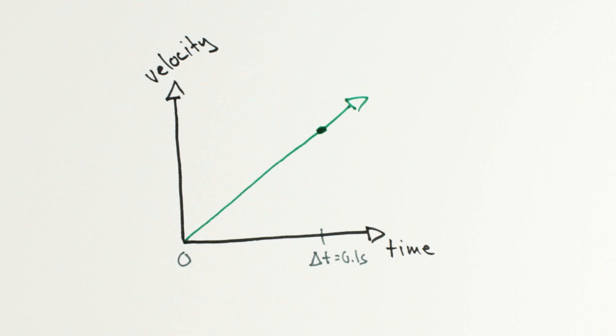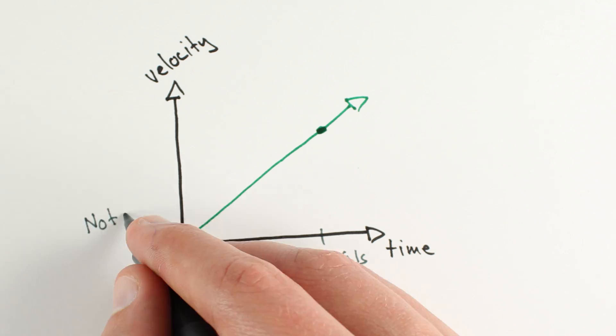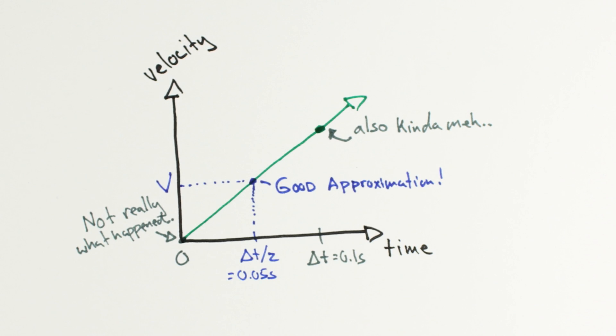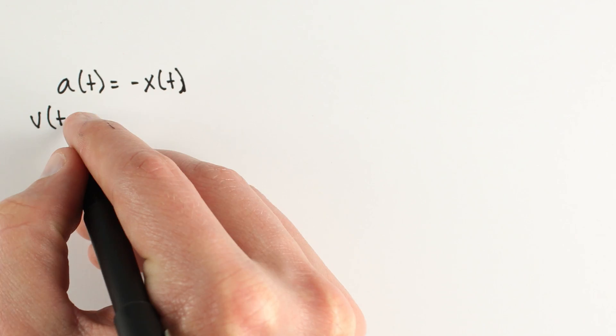For the interval we cover in delta t seconds, it seems silly to use the velocity at the beginning or the end, since those don't really represent what happened over the interval. So instead, we'll use the velocity in the middle of the interval.